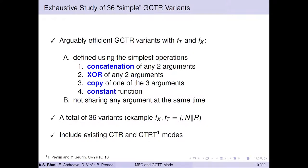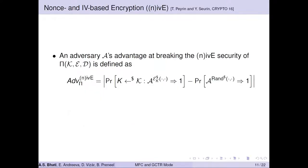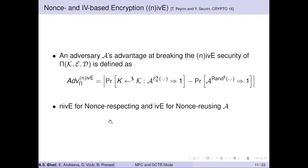Let us now recall the security notion called NIVE security for encryption schemes that follow the syntax of nonce- and IV-based encryption. This notion was introduced by Parian and Shuren in Crypto 2016 and is the same notion used for the analysis of counter-in-tweak mode. Informally, NIVE security says that an encryption scheme is NIVE secure if it is indistinguishable from a random function whose output length depends on the input message length, where NIVE stands for Nonce-Respecting and IV-based Encryption.